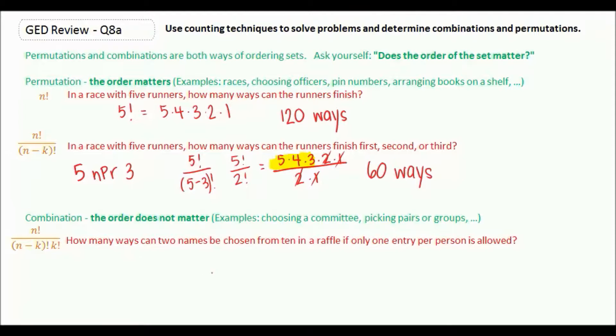So let's look at this example. How many ways can two names be chosen from ten in a raffle if only one entry per person is allowed? So in this case we're starting with ten, but we're choosing two names.